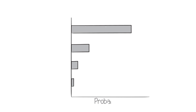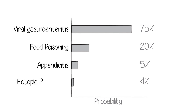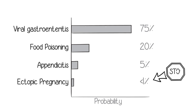Ectopic pregnancy is a can't-miss diagnosis in young women with abdominal pain. In this example, the learner starts by marking tiers of probability clearly with phrases such as most likely, less likely, and unlikely. A can't-miss ectopic pregnancy diagnosis is also mentioned, and he gives the evidence for and against each condition.